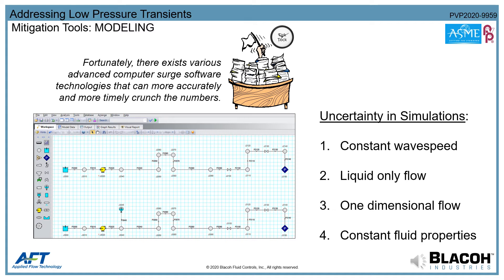It is important to understand key assumptions and simplifications that even computer software calculations take into account. The two primary factors attributing to some uncertainty are constant wave speed and liquid-only flow. To some extent, there is always a degree of air entrainment within a fluid, which can lower the wave speed. When a system is experiencing cavitation, it is most certainly in two phases — liquid and gas.